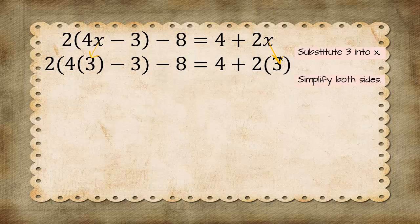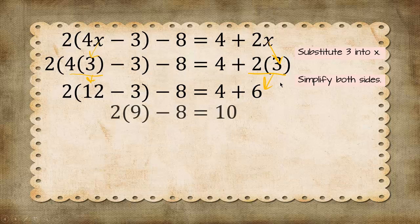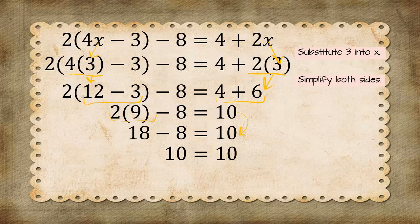Now we're going to simplify both sides. So 4 times 3 is 12. 2 times 3 is 6. 12 minus 3 is 9, and then 4 plus 6 is 10. 2 times 9 is 18, and then 4 plus 6 of course is 10. 18 minus 8 is 10, and 10 equals 10.